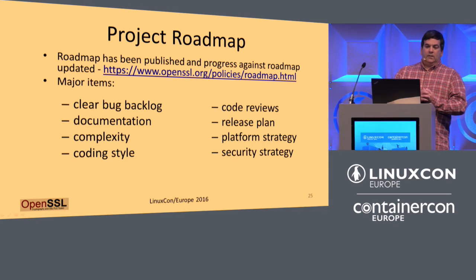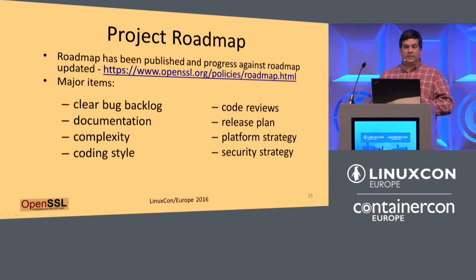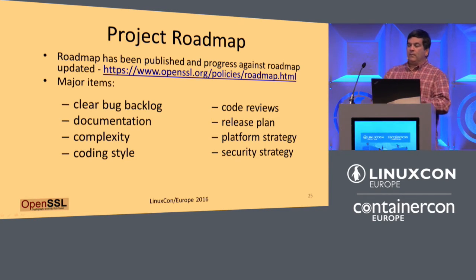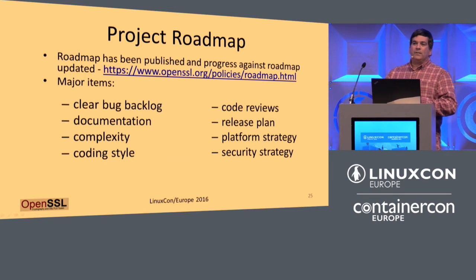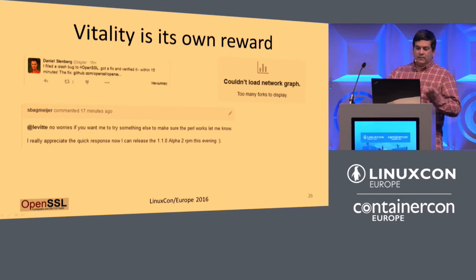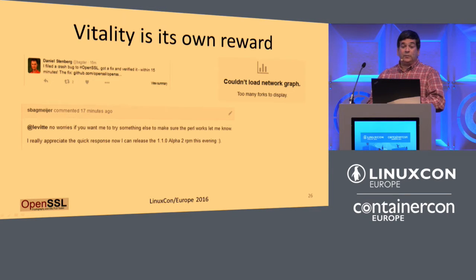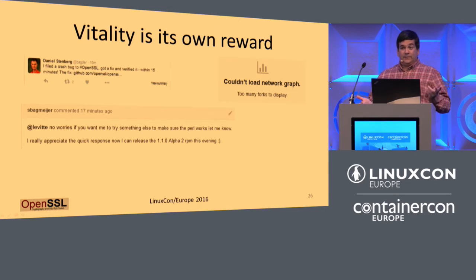Project roadmap — we published it, it's here. We're working on all of these things. We're doing a refresh. We are trying to be honest, frank, forthright: yeah, we didn't do this, we'll try to get better. Saying we're going to document every API — there are 2,400 of them to be documented. We're going to focus on this one set and leave 2,000 alone for now. We're trying to set expectations appropriately. The increased vitality is its own reward — we have about 1,100 forks on GitHub. We have people like Daniel Stenberg of Curl saying 'I found a bug, you fixed it in 15 minutes.'